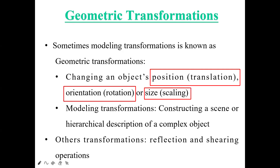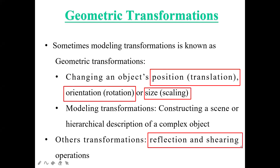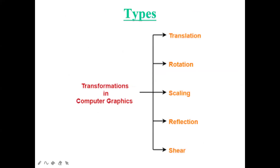We also have modeling transformation, where we construct a scene describing how an object looks, what it contains, and how inheritance happens inside that object. We also have reflection operation and shearing operation. If you get a question on 2D transformation, you must justify these three main types: translation, rotation, and scaling.